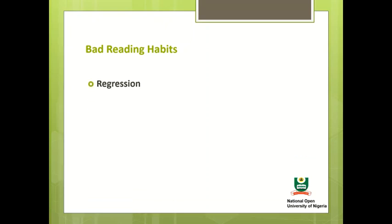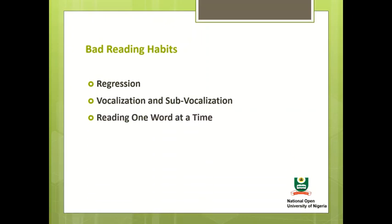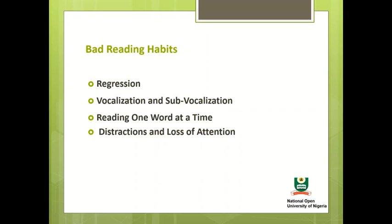Bad reading habits: regression — this is the practice of re-reading the same information over and over again. Vocalization and sub-vocalization — this is when you pronounce words while reading. Reading one word at a time is another bad reading habit, as are distractions and loss of attention.